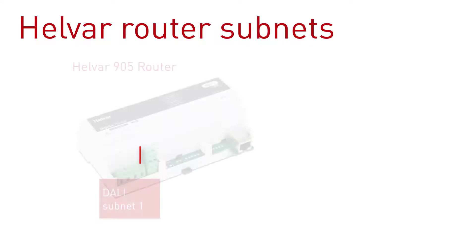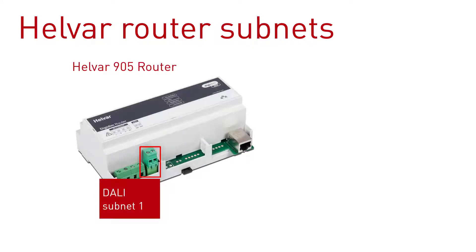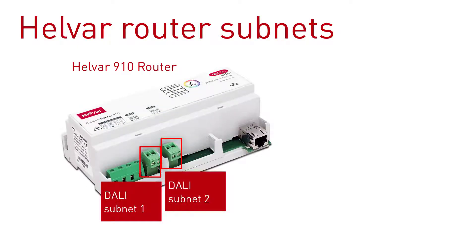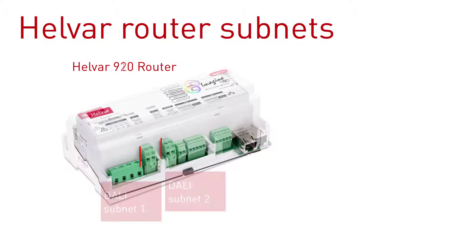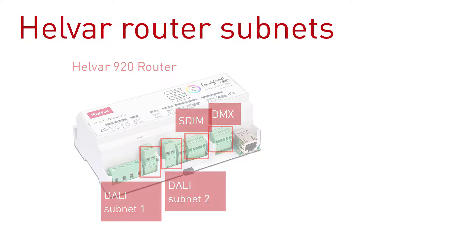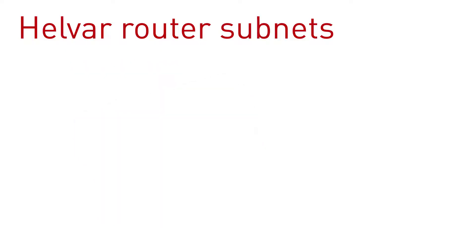The 905 has one DALI subnet. The 910 has two DALI subnets. And the 920 has two DALI subnets and also connects to SDIM and DMX. This means that you see different subnets when you're in Designer in Devices view, depending on what type of router is in the workgroup.